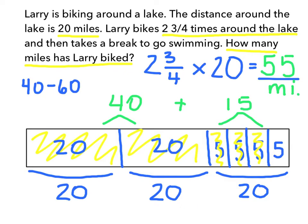So Larry biked 55 miles around the lake. The nice thing is that we figured out at the beginning it was going to be between 40 and 60, and our answer is in the right ballpark, so we know that we are correct.